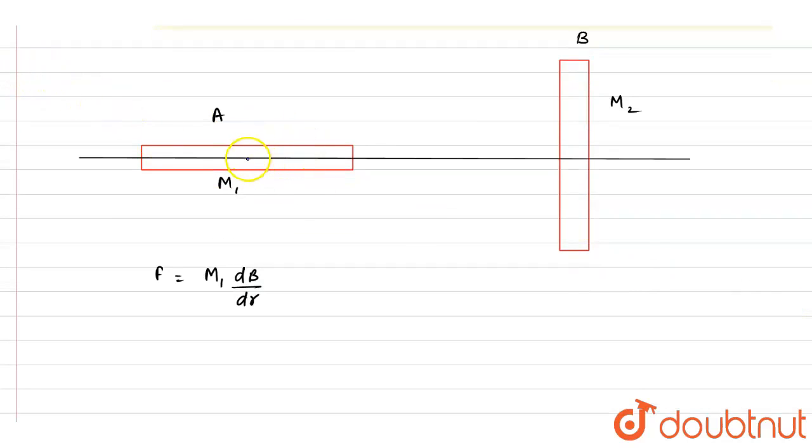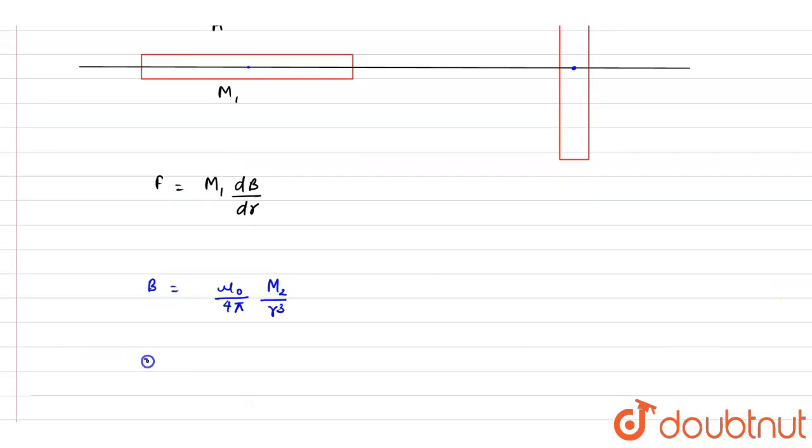So if you see, this is the magnet and this line is the equatorial line. So you can write down the magnetic field at the equatorial line, it is equals to M2 by r cube. So you can just differentiate both sides.